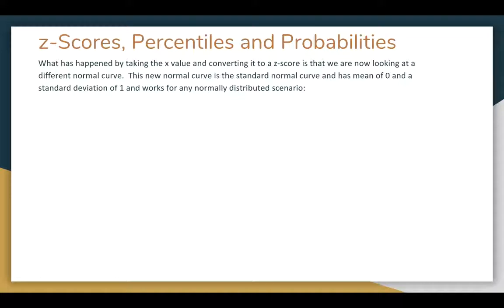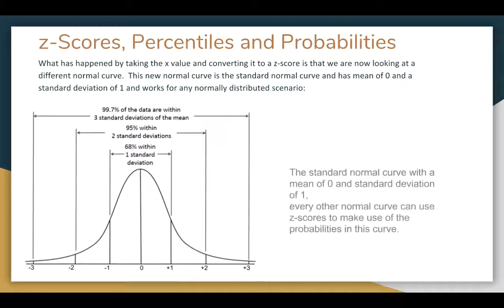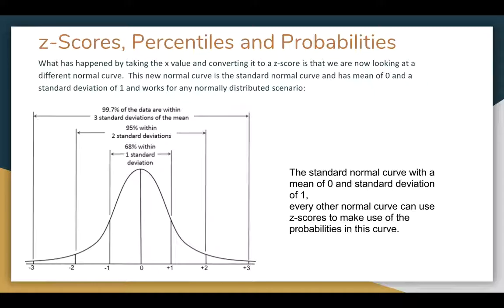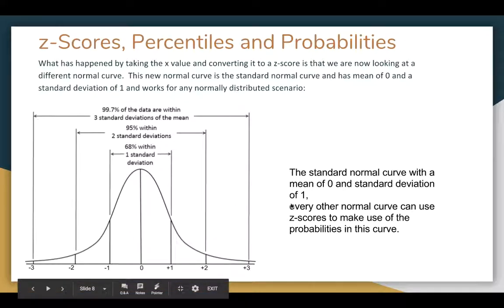What's happened by taking the x value and converting it to a z-score is now we're looking at a different curve, the normal curve. So it's still normally distributed, but now the mean is 0 and the standard deviation is 1. And so the plus 1 tells you that you're plus 1 z-value and plus 2 is 2 z-values. The standard normal curve has a mean of 0 and a standard deviation of 1. And this is what enables you to do a Google image search and say the normal distribution chart. Because what we can do is we can take any situation with a mean and standard deviation, use z-scores to get it to this chart, this exact chart.